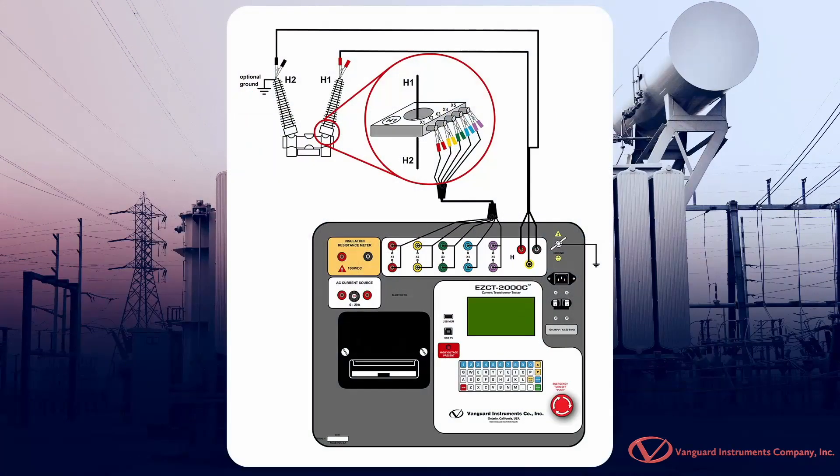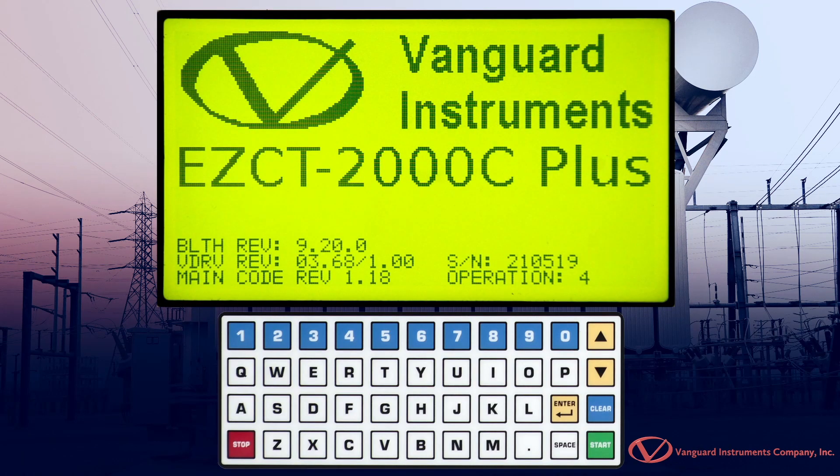To perform a ratio test, we'll make connections per this diagram. Once the connections have been made, we'll start from the unit's main menu.